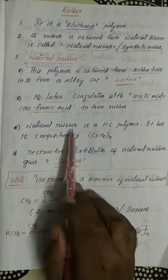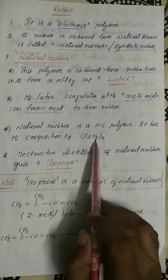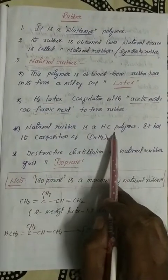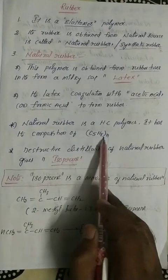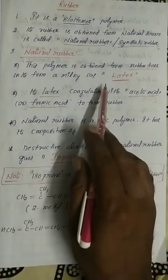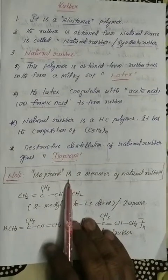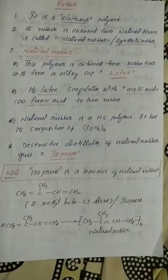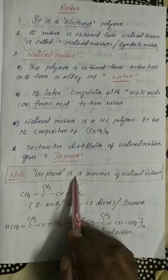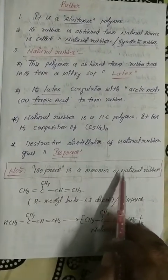Natural rubber is a hydrocarbon polymer. It has the composition C5H8. Destructive distillation of natural rubber gives isoprene. This is a most important point. Natural rubber undergoes destructive distillation to give isoprene, and isoprene is the monomer unit of natural rubber.